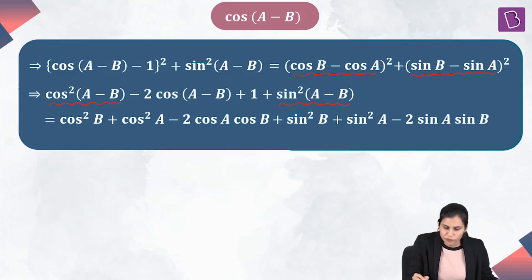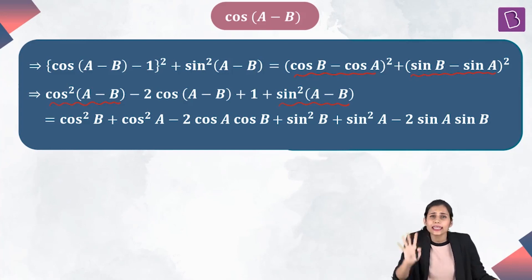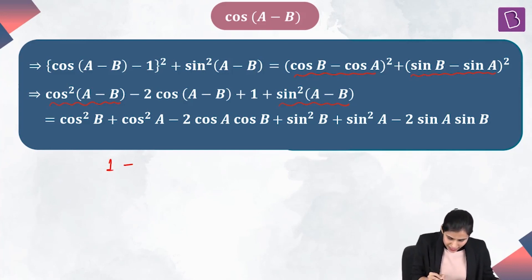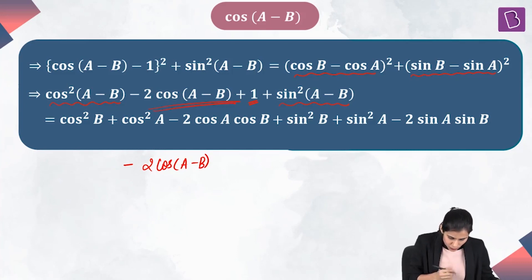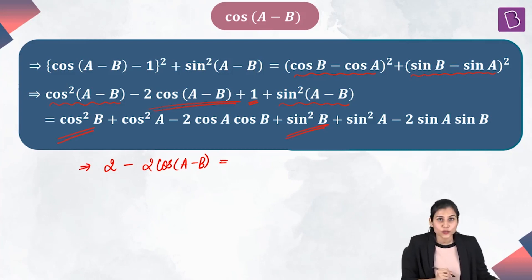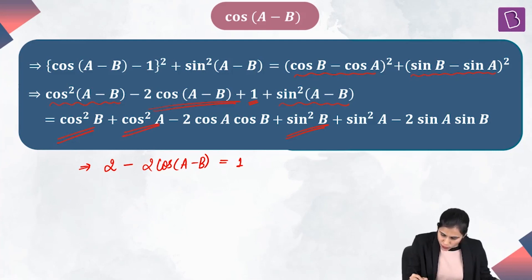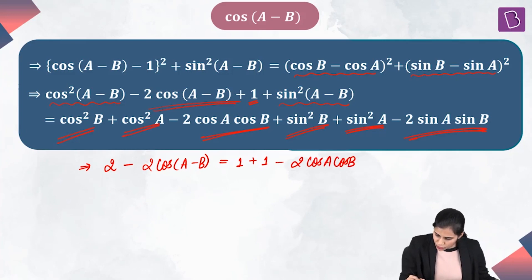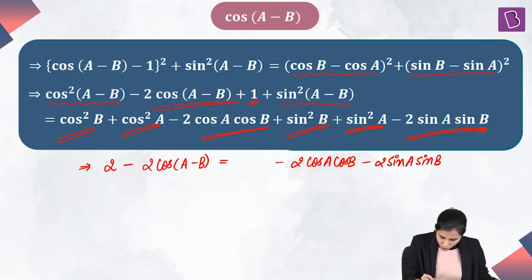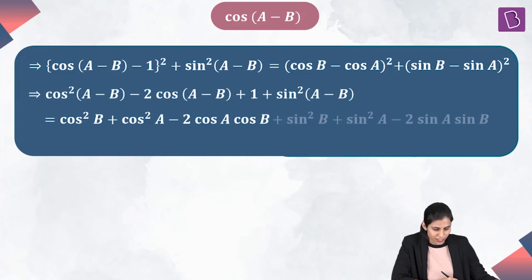Now let's simplify. On the left-hand side, cos²(A−B) plus sin²(A−B) equals 1 by the Pythagorean identity, and this gives us 2 minus 2 cos(A−B). On the right-hand side, cos²B plus sin²B equals 1, and cos²A plus sin²A equals 1, leaving us with 2 minus 2 cos A cos B minus 2 sin A sin B. So left-hand side becomes 2 minus 2 cos(A−B), and right-hand side becomes 2 minus 2 cos A cos B minus 2 sin A sin B.